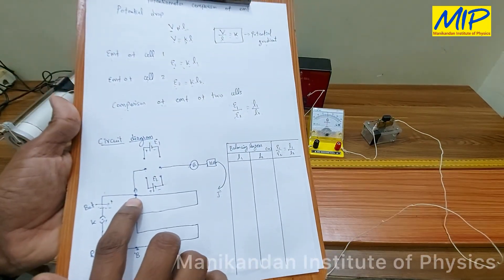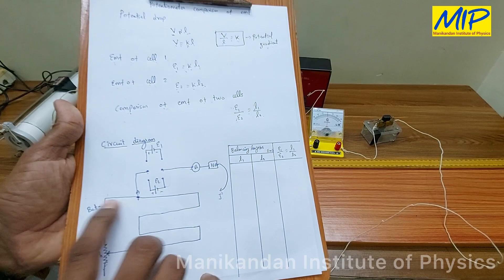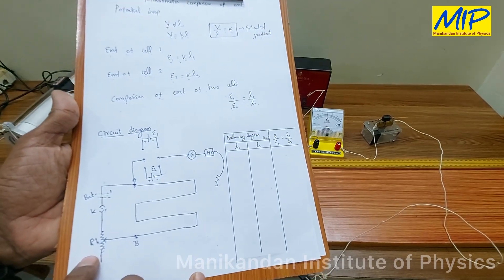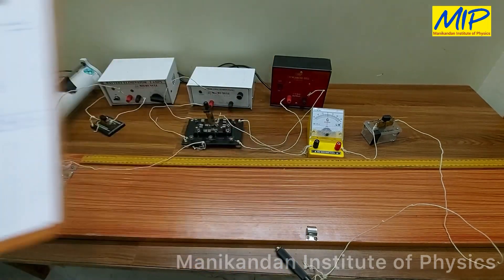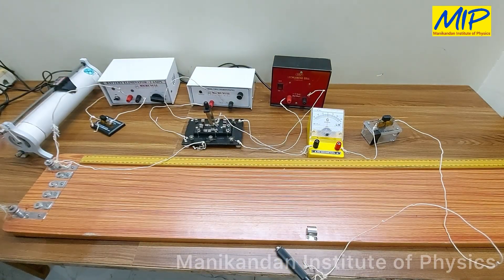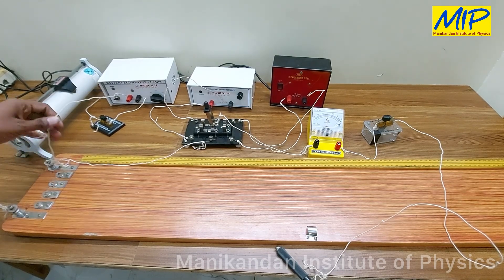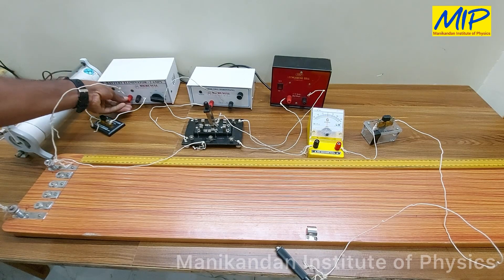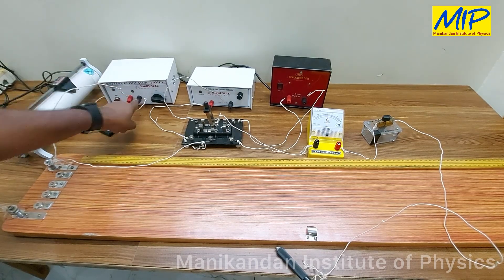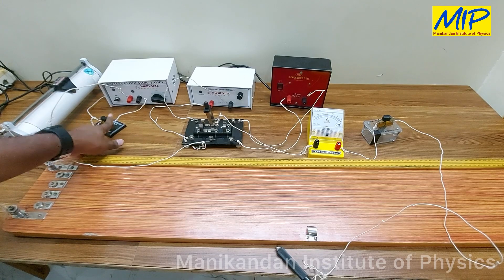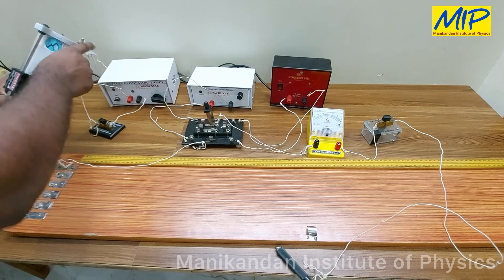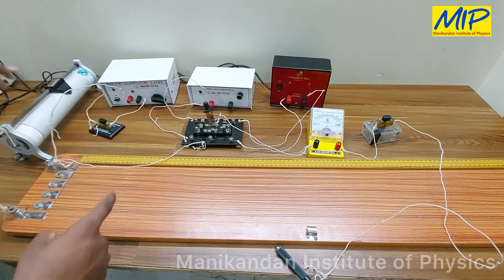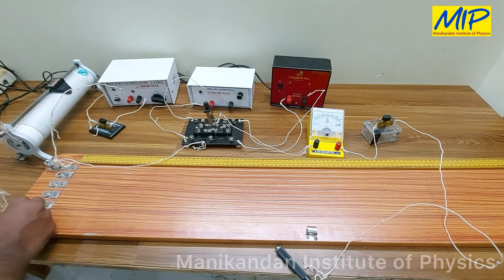From point A of the potentiometer, it is connected with the battery, a key, and a rheostat. From the other end of the rheostat, it is connected with point B. In the potentiometer, we have two points: point A and point B. From the positive end of the potentiometer, it is connected with the positive terminal of the battery eliminator. From the negative terminal of the eliminator, it is connected with the plug key. From the other end of the plug key, it is connected with the bottom end of the rheostat. From the top end of the rheostat, it is connected to point B.